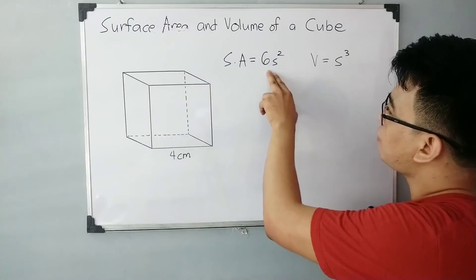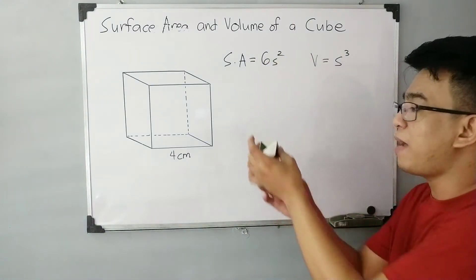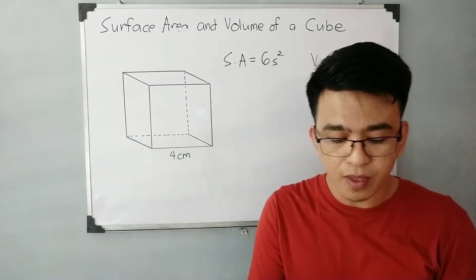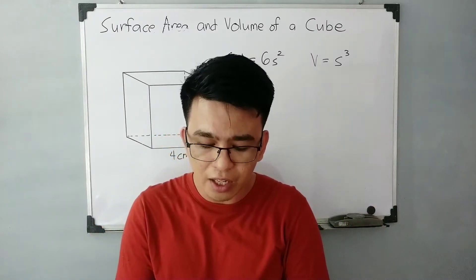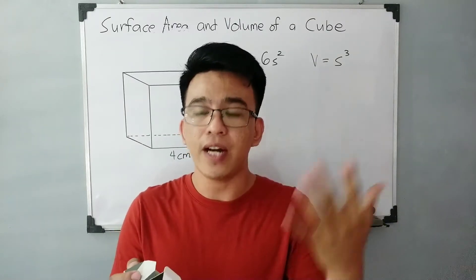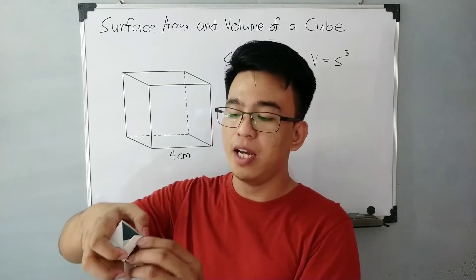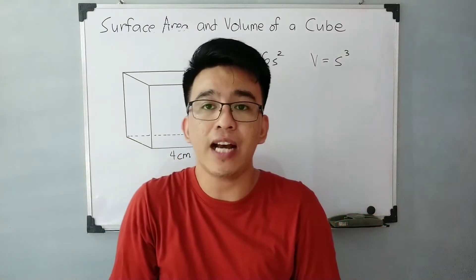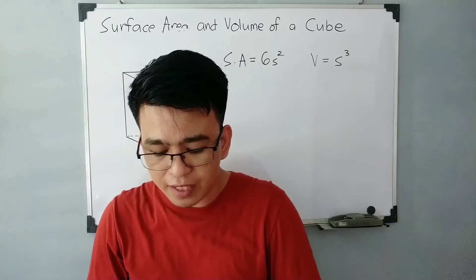When we say surface area, you are simply calculating for the sum of the area of the 6 faces of our cube. As you can notice in our formula itself, you have 6 as the number of faces, and this is the formula for the area of a square — that's why it is 6S squared. For the volume, the simplest word I'll use to make it easier to understand is that volume calculates the total capacity of a solid figure — how much you can put inside the cube. That's what we calculate for the volume.